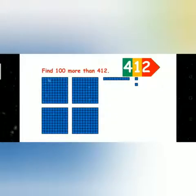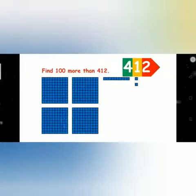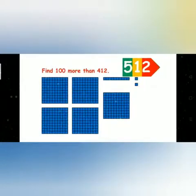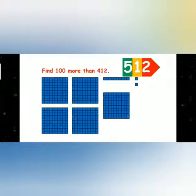Today we will learn 100 more than and 100 less than a number. Let's see the example. There are 400 blocks, 1 tens block, and 2 ones blocks, so this number is 412. For 100 more than 412, we add 100 blocks. When we add 100 blocks, it becomes 500, 1 ten, and 2 ones — so this number is 512.